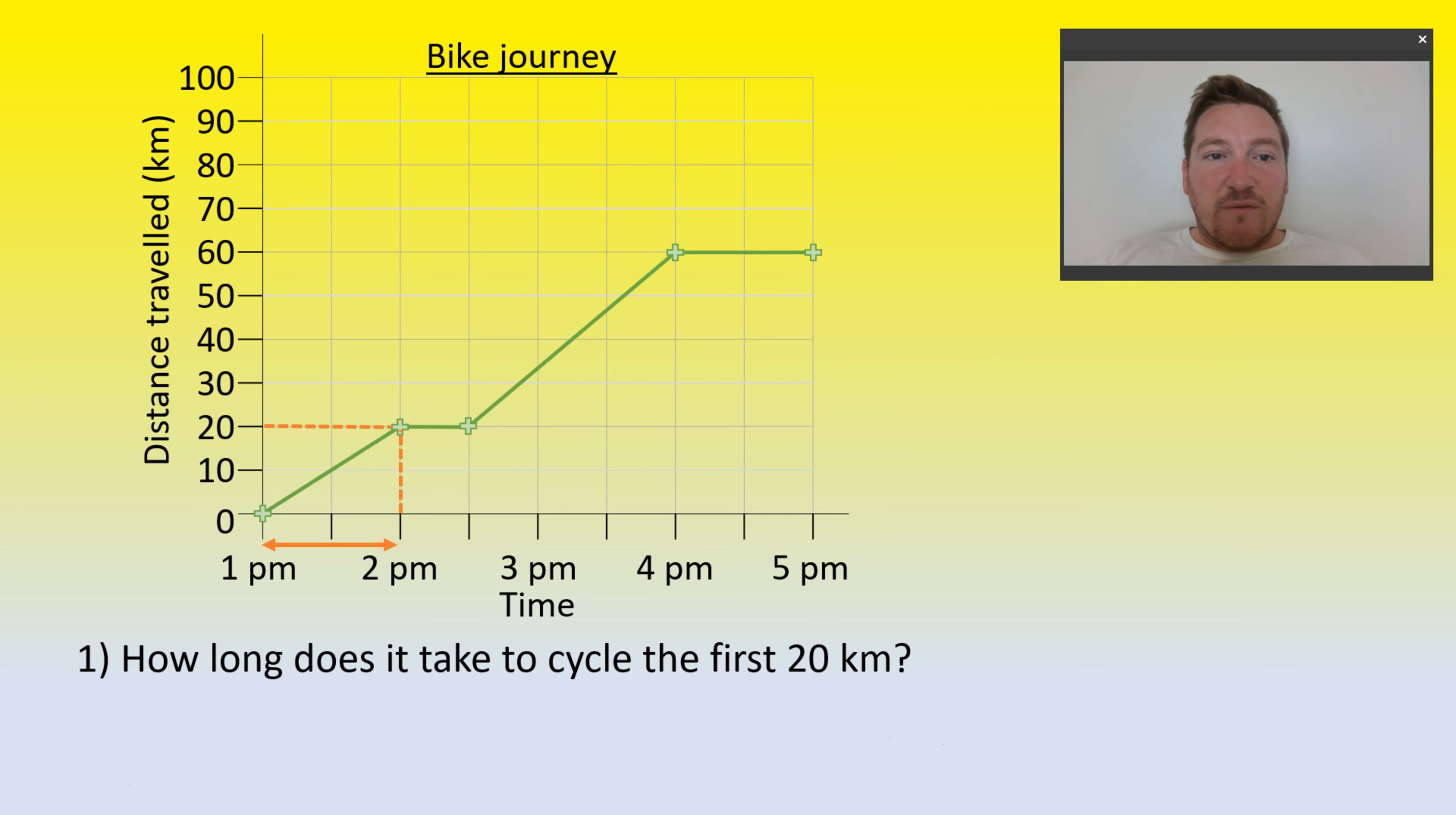Okay, so we're having a look at a bike journey chart now. So how long does it take to cycle the first 20 kilometers? If you put one hour you would be correct. If you put 2pm you'd be incorrect because we are looking at the amount of time that's passed, not the time that that person has taken to get to 20km.